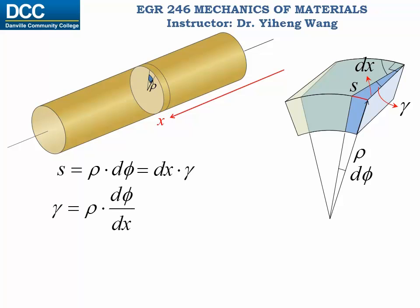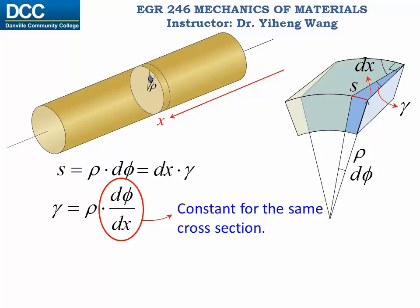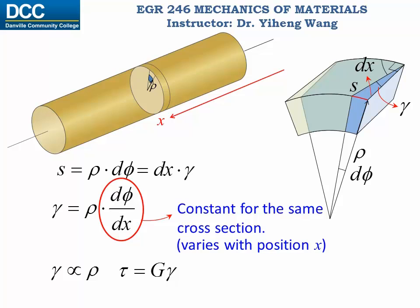Therefore, from this equation, gamma equals rho times d phi over dx. Within the same cross section, d phi over dx is a constant, however it will change at a different x location. Therefore we can derive that gamma, the shear strain, is proportional to the radial location rho. And since according to Hooke's law tau, the shear stress, equals G times gamma, G being the modulus of rigidity, tau is also proportional to the radial position rho.